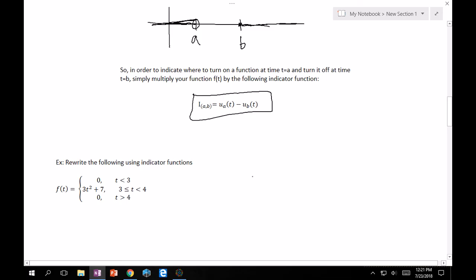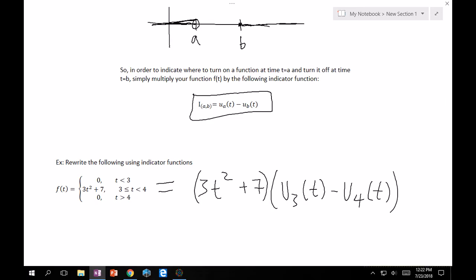Because now, now that you're a little bit more mathematically mature, you can now rewrite this in a single line. Which is what the purpose of it is. You know that 3t squared plus 7 is only turned on between 3 and 4. So, this is as easy as 3t squared plus 7. Because everywhere else it's 0. It's 0 before 3 and it's 0 after 4. And you want to indicate between 3 and 4. So, that is as easy as 3u3(t) minus u4(t). And that's it. One line. You no longer need to use the curly brace notation.